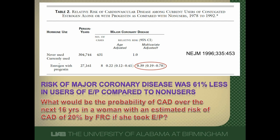Let's say a woman comes to the office and a Framingham risk calculator determines she has a 20% chance of major cardiovascular disease. We're deciding whether to use estrogen and progesterone. Taking her baseline 20% risk and applying the relative risk from the Nurse's Health Study: multiply her baseline risk by the relative risk, and her final risk would be about 8%. This makes sense — the relative risk was less than 1, so risk is reduced. This is how we use an observational study to help care for a patient.